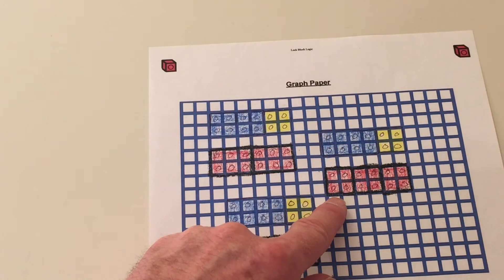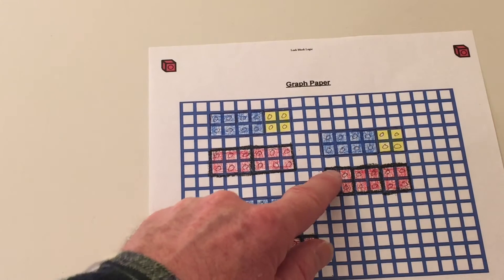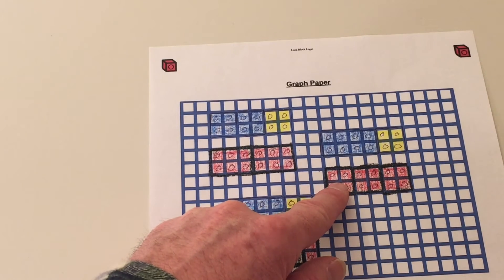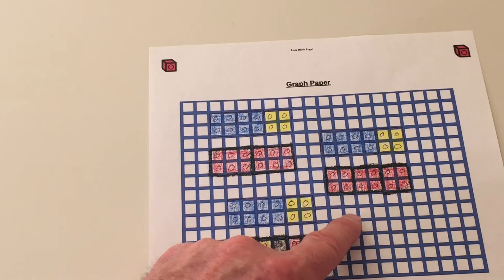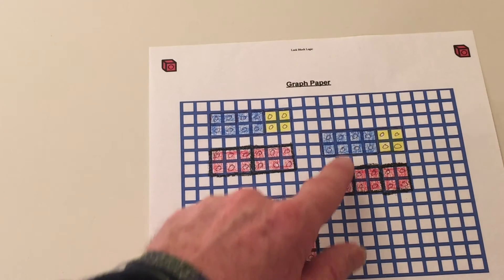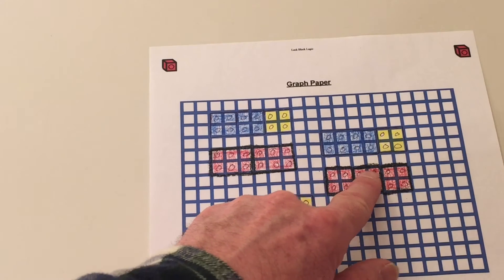The first one we did was with 4-dot blocks. 1, 2, 3, 4. 1, 2, 3, 4. 1, 2, 3, 4. How many 4-dot blocks are there? In 12, there are 1, 2, 3.